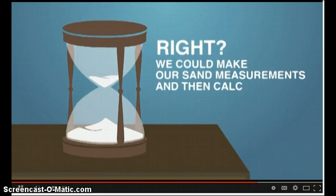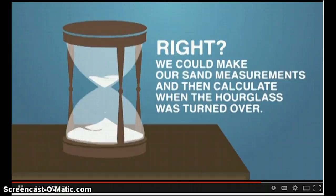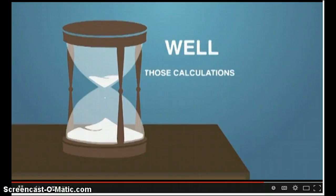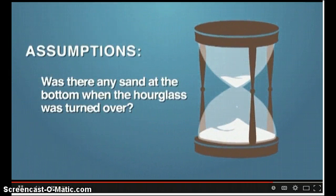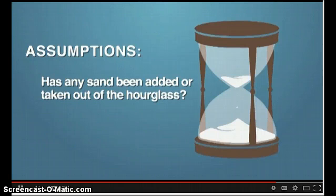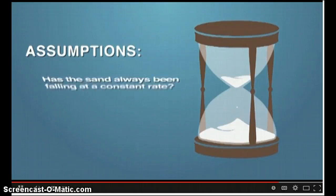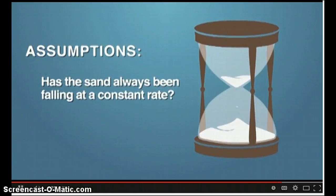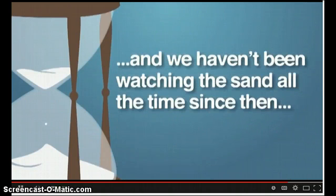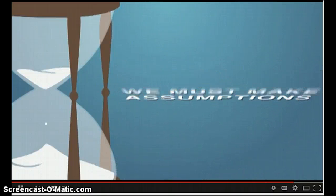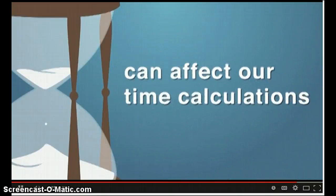Well, those calculations could be wrong because we may have failed to consider some major assumptions. Like, was there any sand at the bottom when the hourglass was turned over? Has any sand been added or taken out of the hourglass? Has the sand always been falling at a constant rate? Since we did not observe the initial conditions when the hourglass started and we haven't been watching the sand all the time since then, we must make assumptions. All three of those assumptions can affect our time calculations.